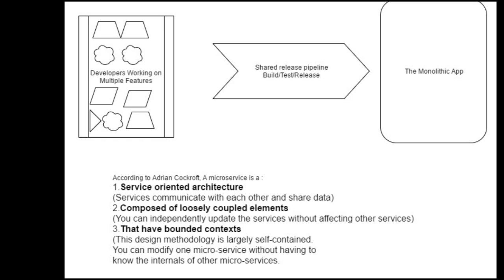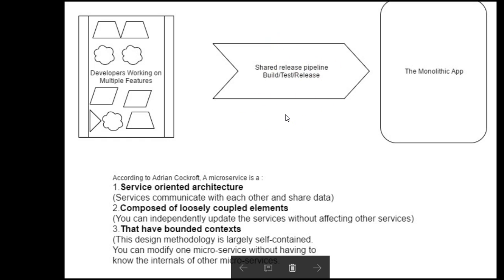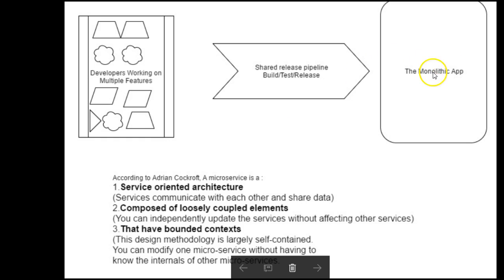Up here you will see the architecture of a monolithic application. This is the kind of default application that people tend to build — the old way of building applications. Right now the new way is using microservices. With the monolithic approach, you have a team of developers building several different features, and then they have to deploy it and it has to go live.